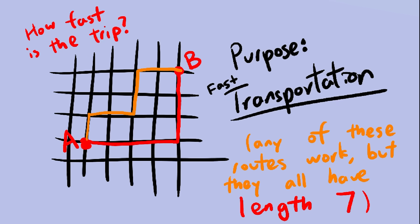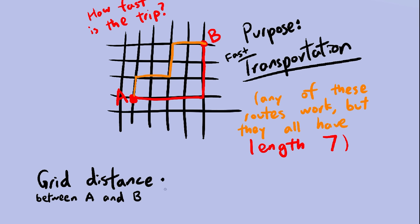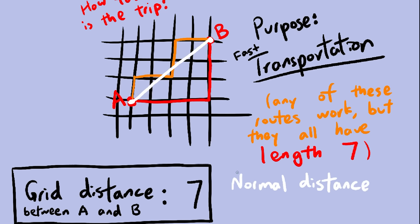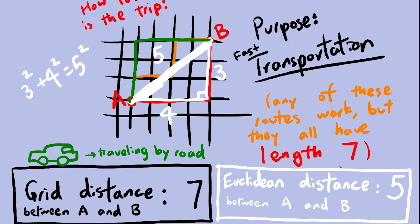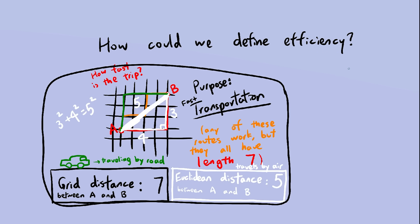If we have a square grid and we want to get from point A to point B, the shortest possible route is pretty easy to find. In this case, it's 7. We'll call this the grid distance. So the grid distance between these two points is 7, but the normal distance, or Euclidean distance, is just 5, by the Pythagorean theorem. So think cars for grid distance. The journey is 7 blocks by car. And birds for Euclidean distance, the journey is 5 blocks by bird. Okay, so what is the point of all this? Well, we're trying to find some way to measure efficiency, right?